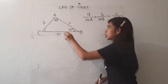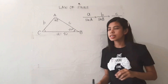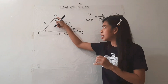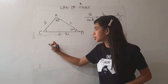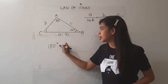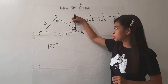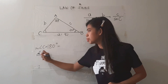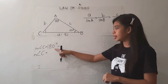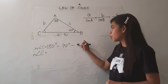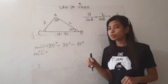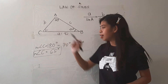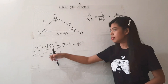Once again, you were given two angles and one side. Just like the previous discussions, if you are given two angles already, since the total measure of all angles of a triangle is 180 degrees, you just subtract these two angles from 180 degrees to get the measure of angle C. So the measure of angle C is 180 degrees minus 70 degrees minus 45 degrees, which equals 65 degrees.